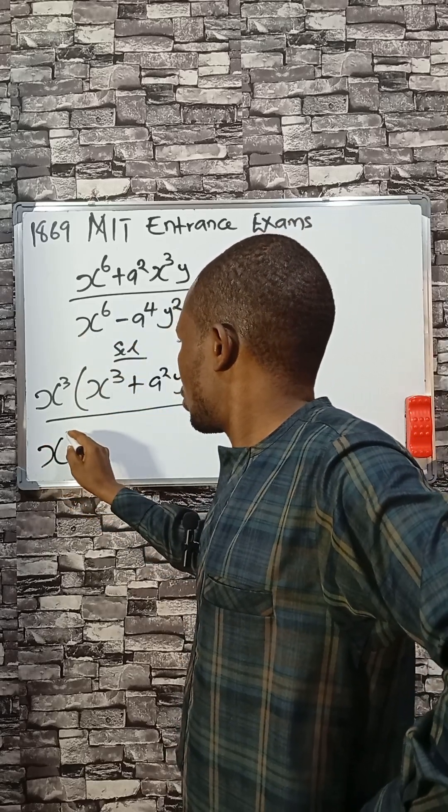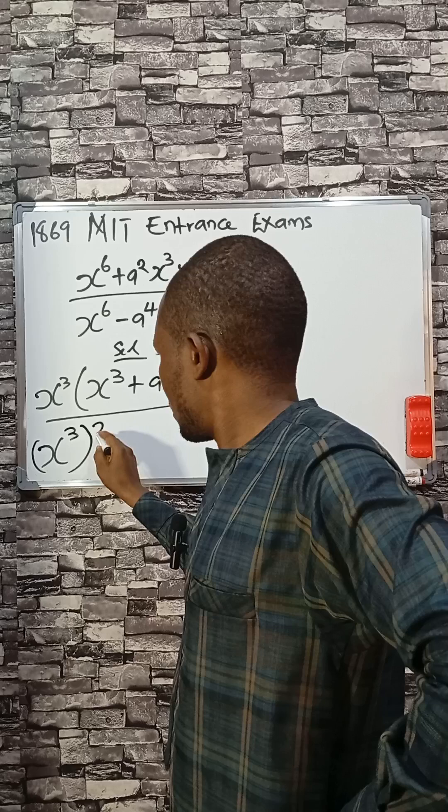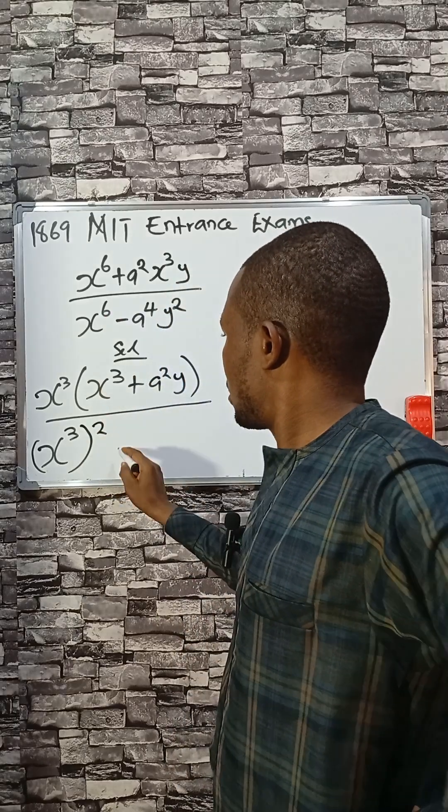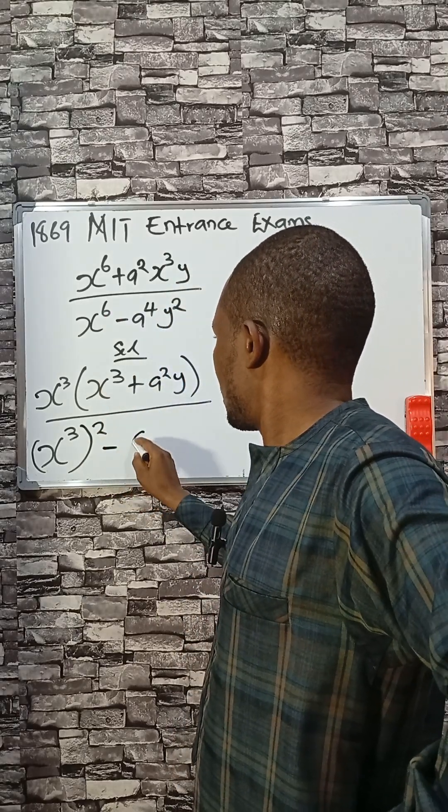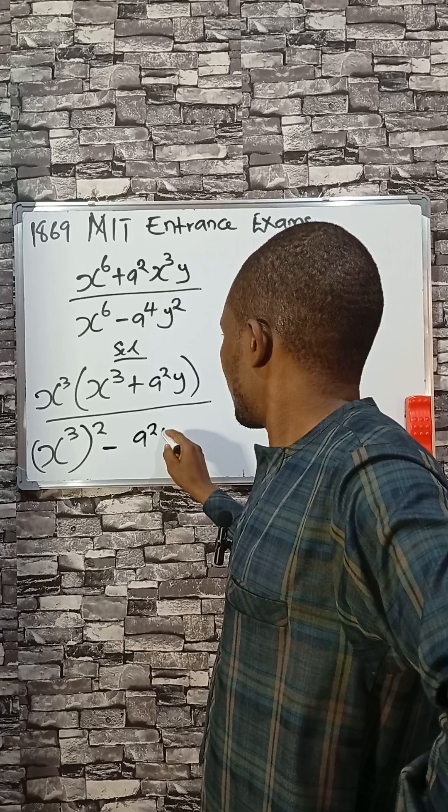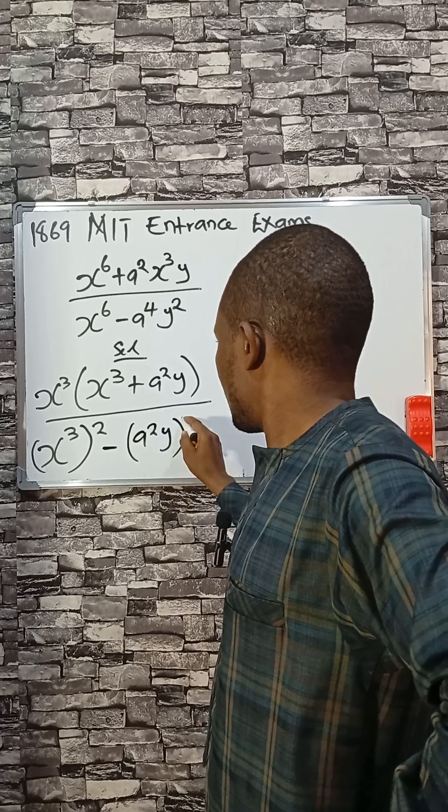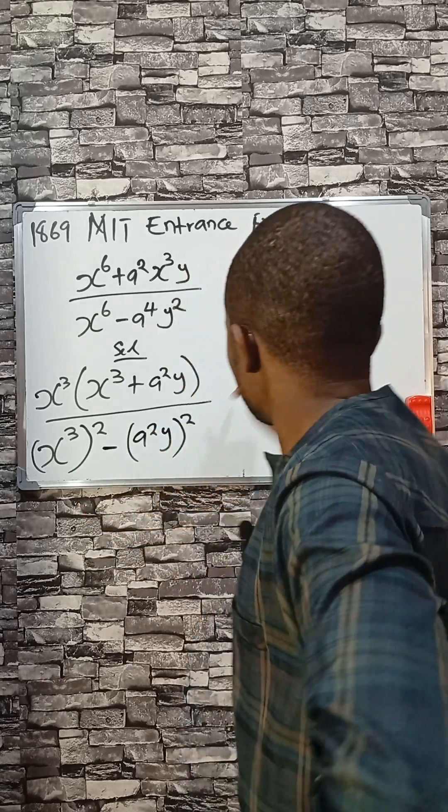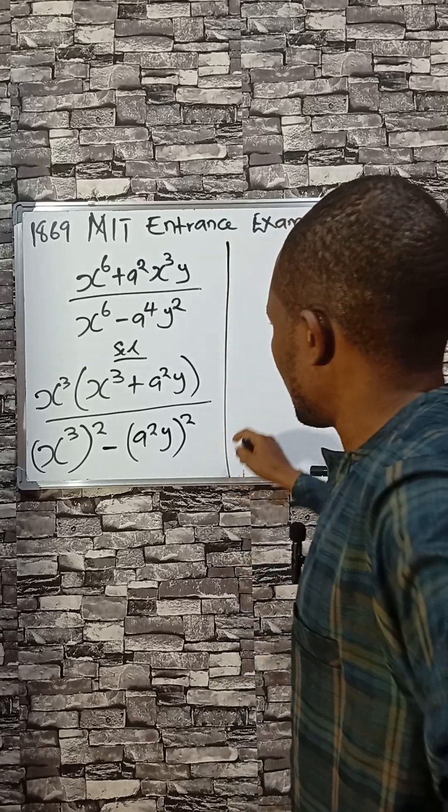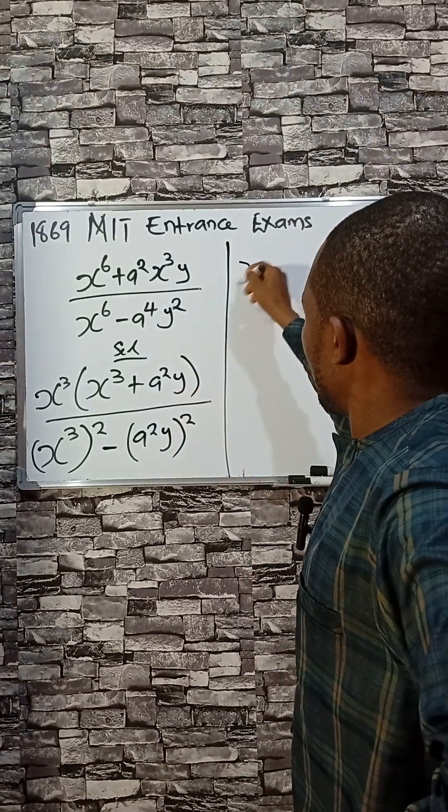X cube squared, because 3 times 2 is 6, minus a squared y then squared. If you check closely, this becomes difference of two squares. Then we solve it as such: x cube...